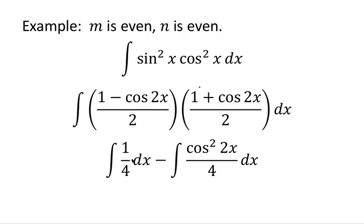We multiply these FOIL style. First times first is 1, so we have one half minus cosine of 2x over 2, times one half plus cosine of 2x over 2. One half times one half is one quarter. The middle inner and outer terms are going to cancel each other out. The last term is negative cosine times positive cosine, giving negative cosine squared of 2x over 4.